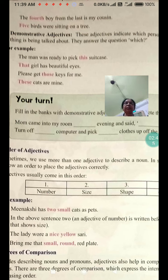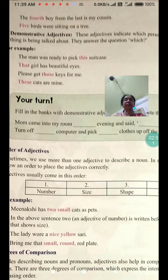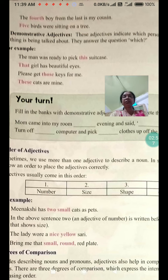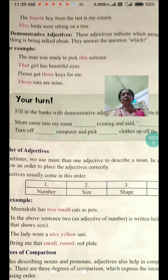Demonstrative adjectives. These adjectives indicate which person or thing is being talked about. They answer the question: which? For example: 'The man was ready to pick this suitcase.' 'That girl has beautiful eyes.' 'Please get those keys for me.' 'These cats are mine.' So this, that, those and these are all examples of demonstrative adjectives.